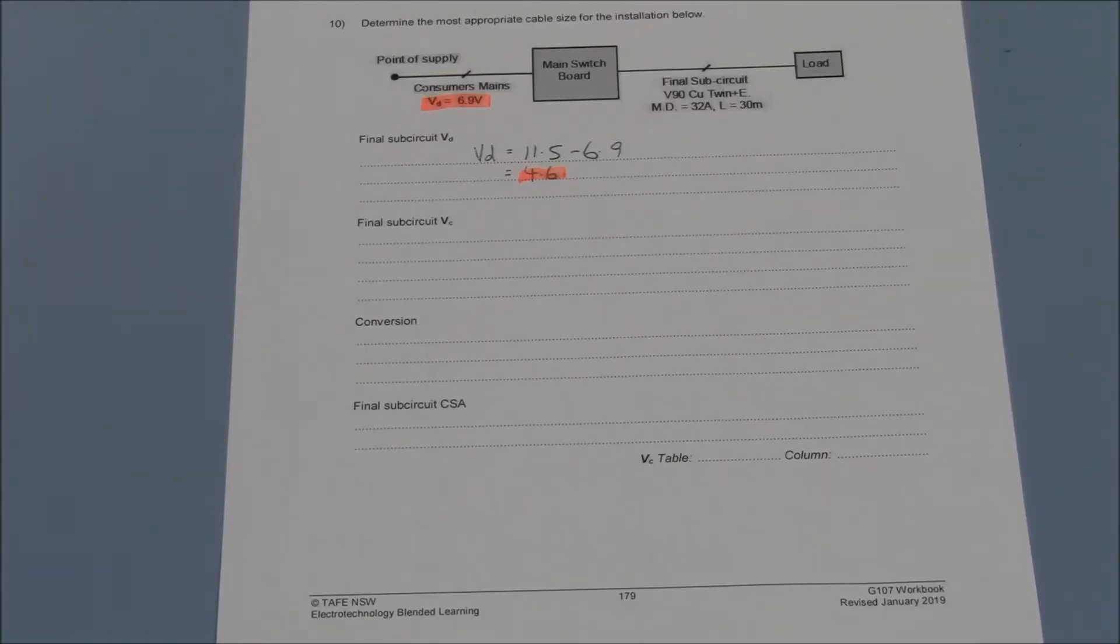The cable for the final sub circuit is a 2 core on earth with V90 insulation, with a circuit length of 30 metres and a maximum demand of 32 amperes.